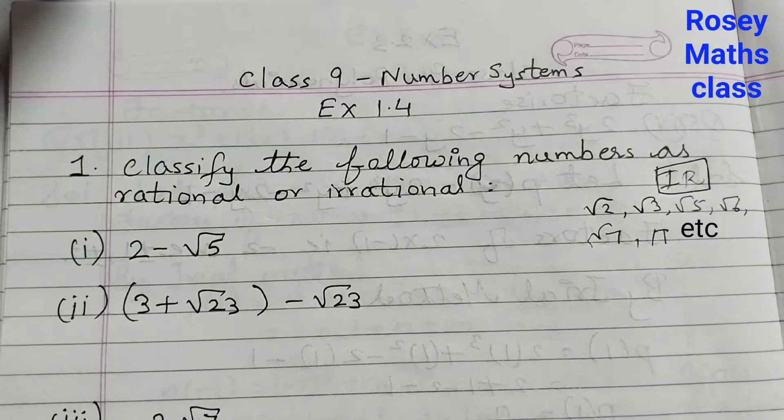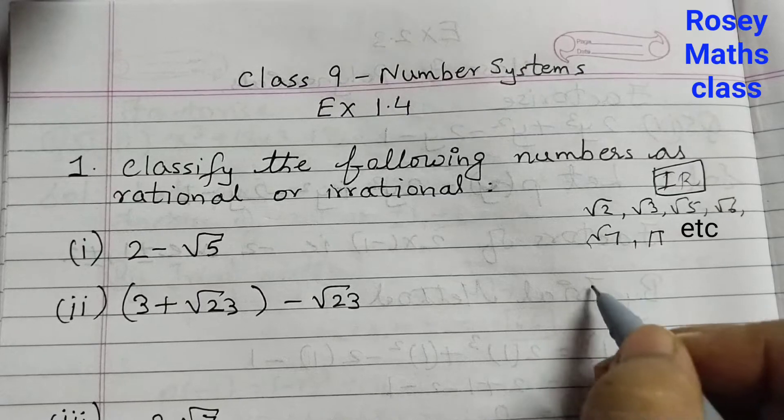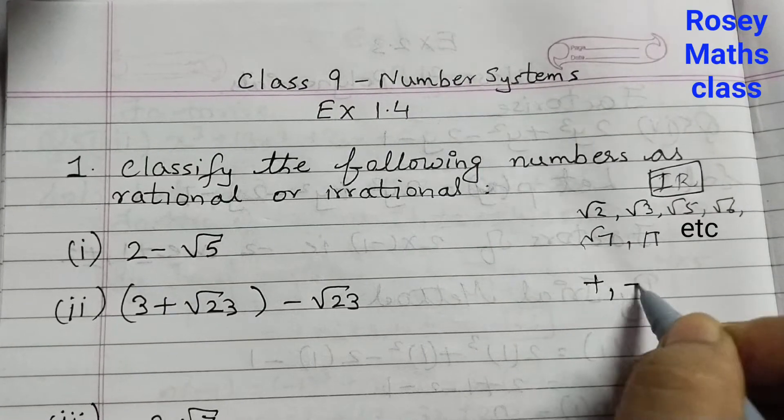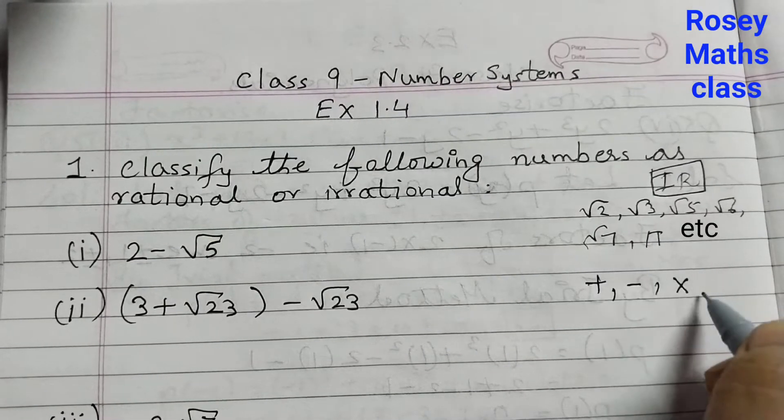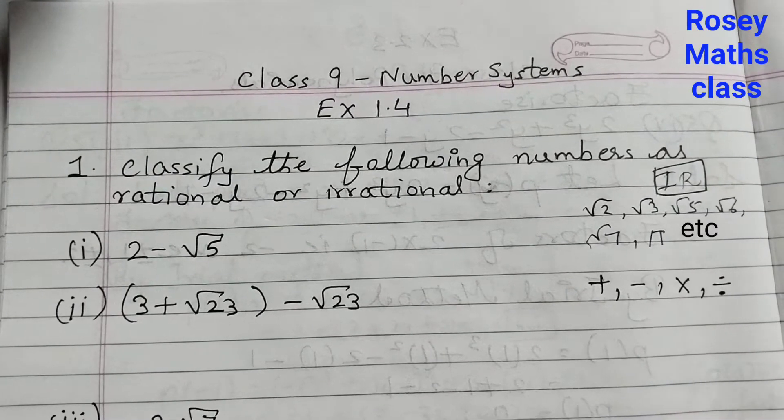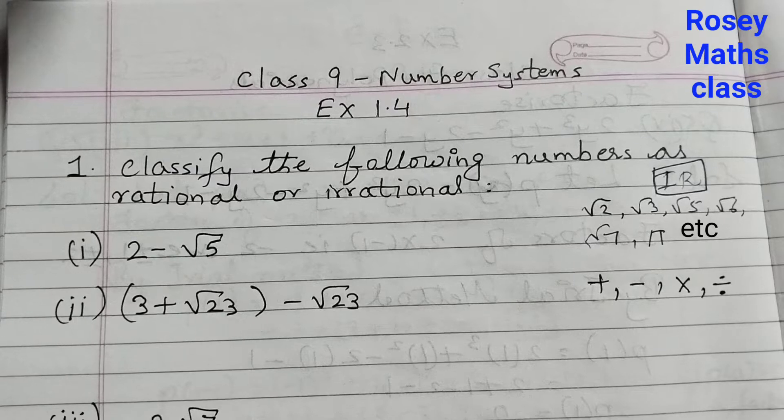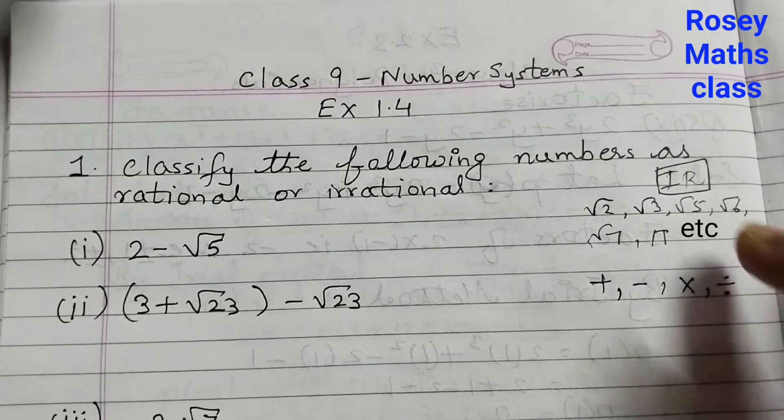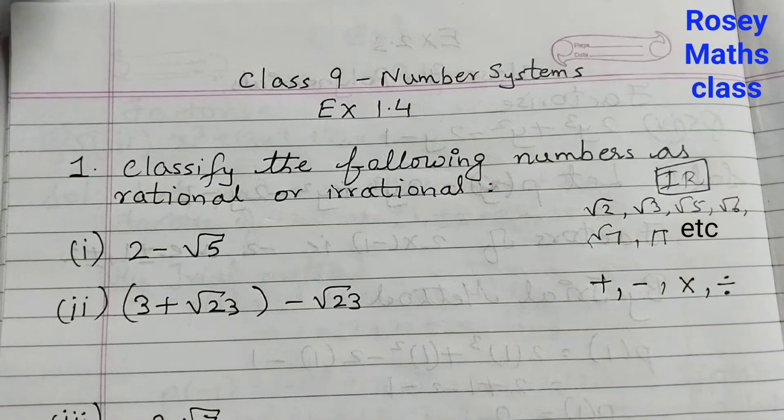Also, you need to know that when we add, subtract, multiply or divide a rational number by an irrational number, the whole thing becomes irrational number. So if you know these two, it's easy for you to solve.